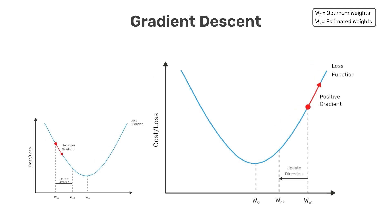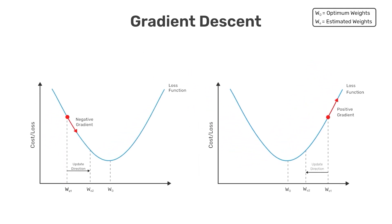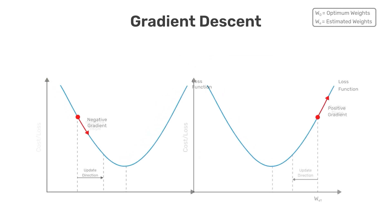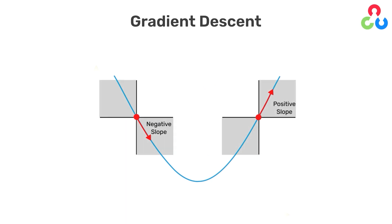Before we continue, we just wanted to clarify one point in case you're wondering. First, notice that we're using the terms gradient and slope interchangeably. But the main thing we wanted to point out here is that in both figures, the arrow that we've drawn to represent the gradient is pointing to the right. In one case, the arrow is pointing down and to the right. And in the other, the arrow is pointing up and to the right. But don't be confused by the fact that both arrows are pointing toward the right.